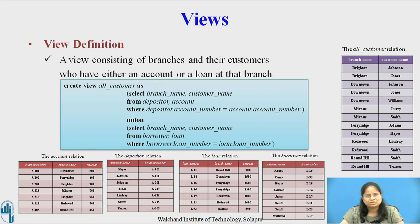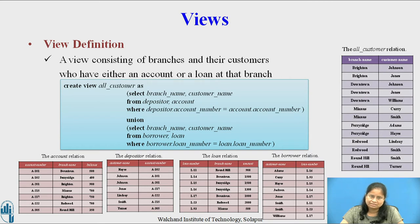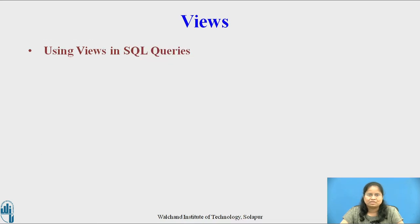Instead, the database system stores the query expression associated with the view relation, and whenever the view relation is accessed, its tuples are created by computing the query result. Thus, the view relation is created whenever needed, on demand. Once we have defined a view, we can use the view name to refer to the virtual relation that the view generates.